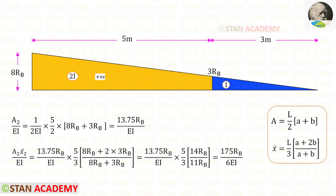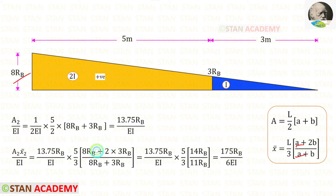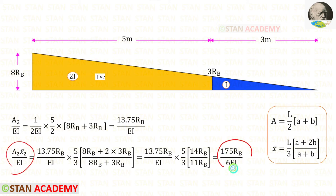Now let us find Area 2 × x̄2 upon EI. We have already found Area 2 upon EI. We only need to find x̄2 using the centroid formula, with l=5, a=8Rb, and b=3Rb. For Area 2 × x̄2 upon EI, we get 175Rb upon 6EI.